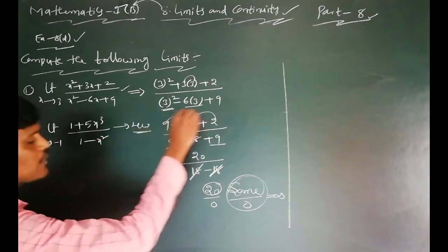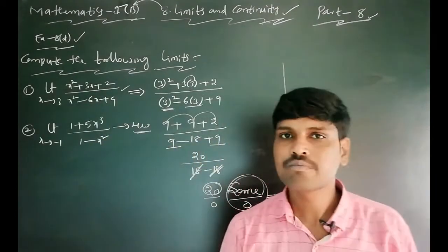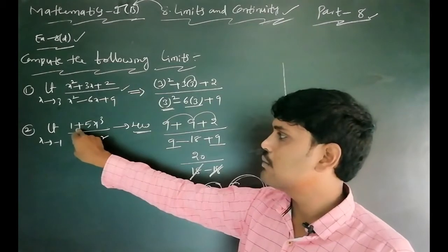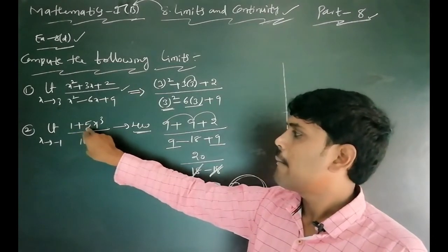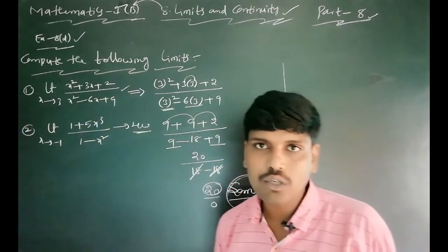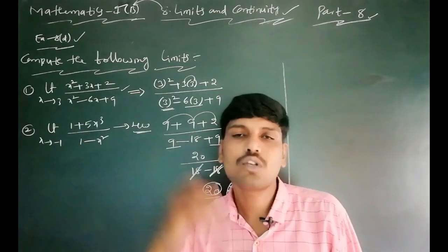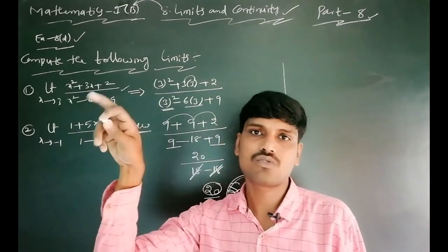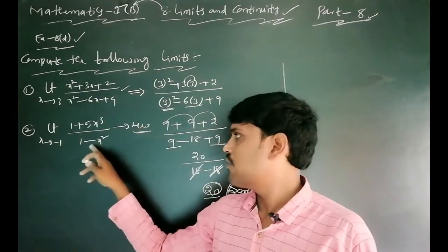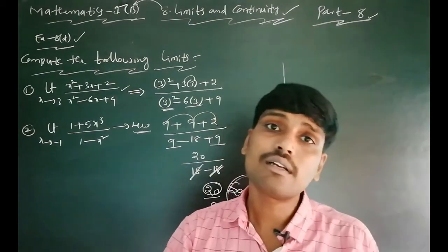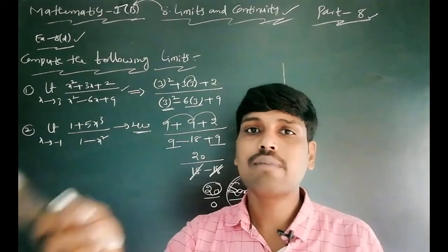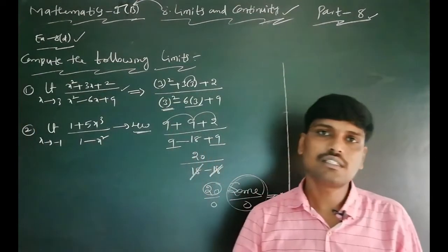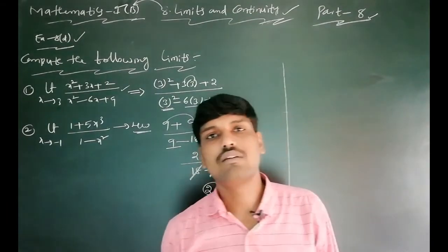This one is a moment problem and an assignment problem. Substituting x = -1: numerator gives 1 plus 5 times (-1) cubed, which is 1 minus 5 = -4. Denominator gives 1 minus (-1) squared = 1 minus 1 = 0. Again, something divided by 0, which is positive undefined.